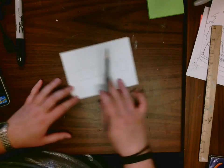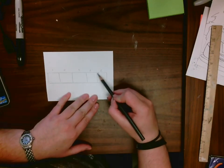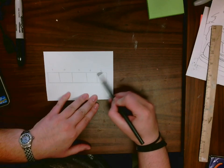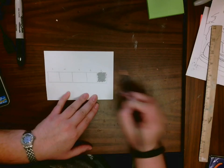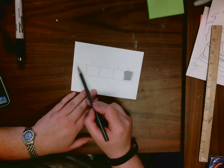You're going to do what's called a value scale. So that means five is going to be the darkest you can go by pressing as hard as you can. One is going to be as light, you're barely tickling it.